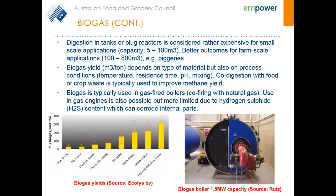The biogas yield depends on, apart from the type of material being fed into the system, certain process parameters such as temperature, residence times, pH, and the amount of mixing. When designing an anaerobic digestion process, these parameters will have to be evaluated to ensure you're getting the most biogas possible.